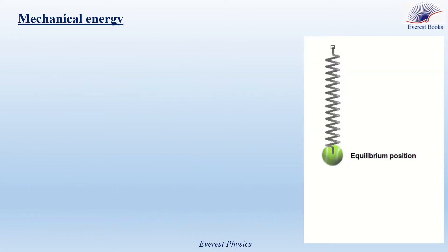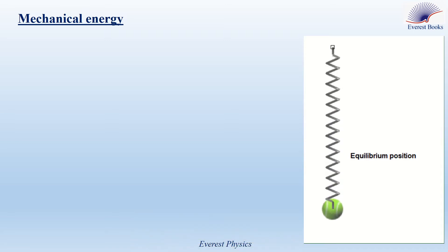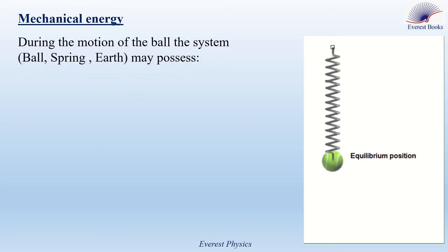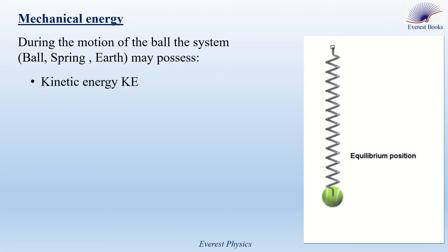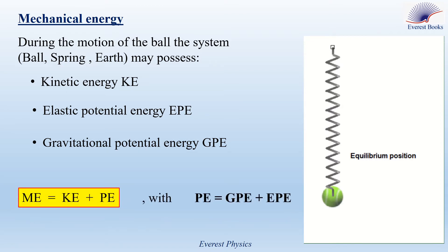Mechanical energy. Watch this short video where a ball is attached to the lower end of a vertical spring. When the system is released, the ball moves up and down. During the motion of the ball, the system ball-spring-air may possess kinetic energy due to the motion of the ball, elastic potential energy due to the deformation of the spring, and gravitational potential energy due to the position of the ball relative to a reference level. The sum of these energies is called the mechanical energy of the system.